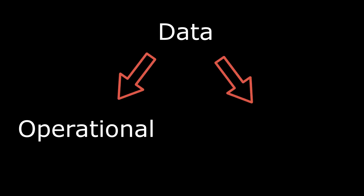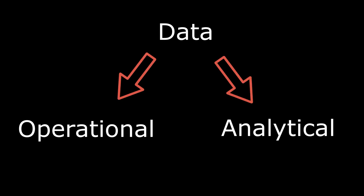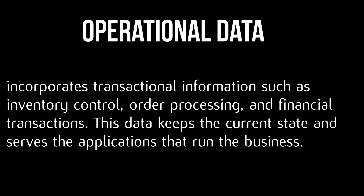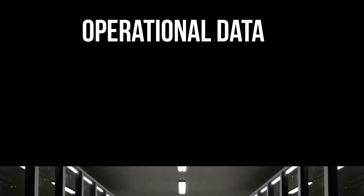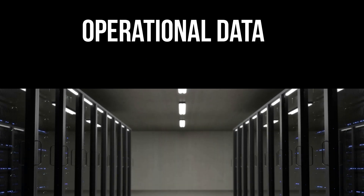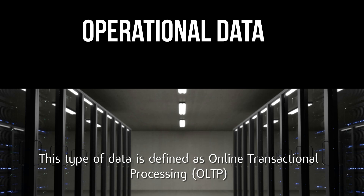There are two different kinds of data that we use. First is operational data, which incorporates transactional information such as usernames, order processing, and financial transactions. This data keeps the current state of business and serves the applications that run the business.